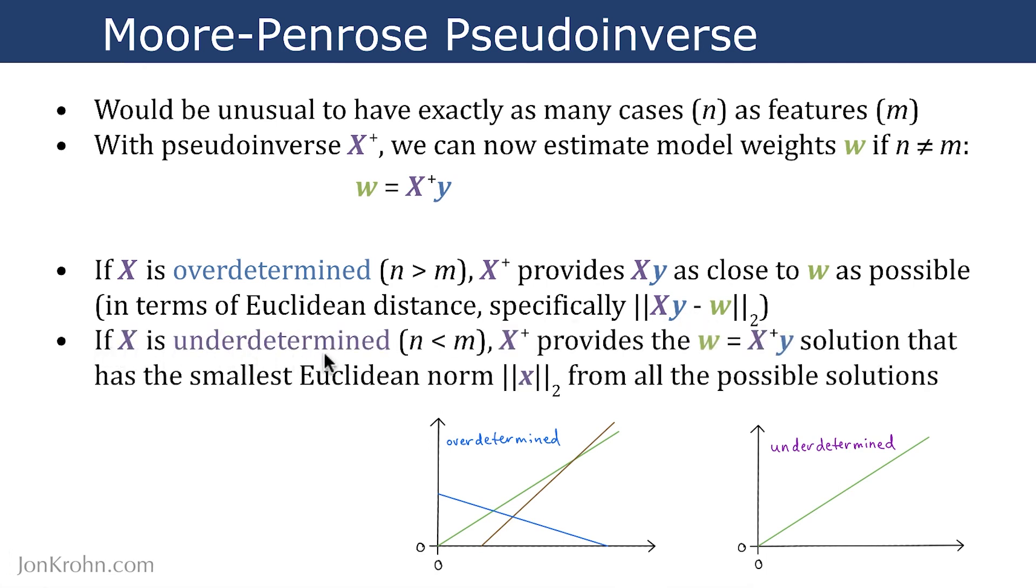In contrast, if X is an underdetermined system where our number of cases is smaller than our number of features, this isn't what we would typically see with a regression model, but this is the kind of scenario you might have with a deep learning model. Deep learning models might have millions of features, so M might be a very large number, but you might only have thousands or tens of thousands of cases in your dataset, and that's common in deep learning. In that kind of situation where you have an underdetermined system, then the pseudoinverse provides the solution to this equation that has the smallest Euclidean norm, L2 norm, from all of the possible solutions.